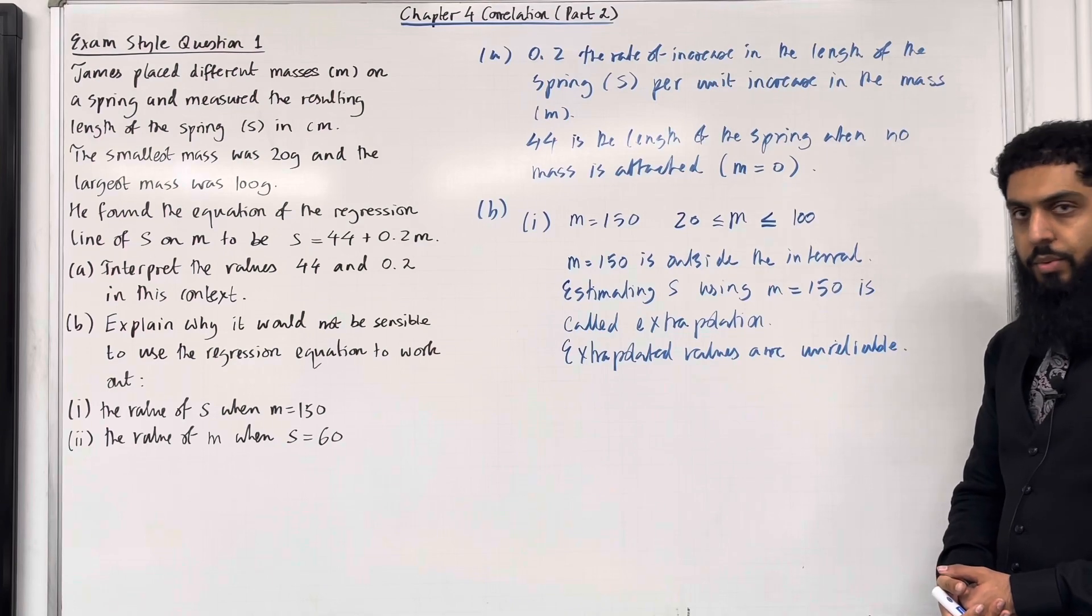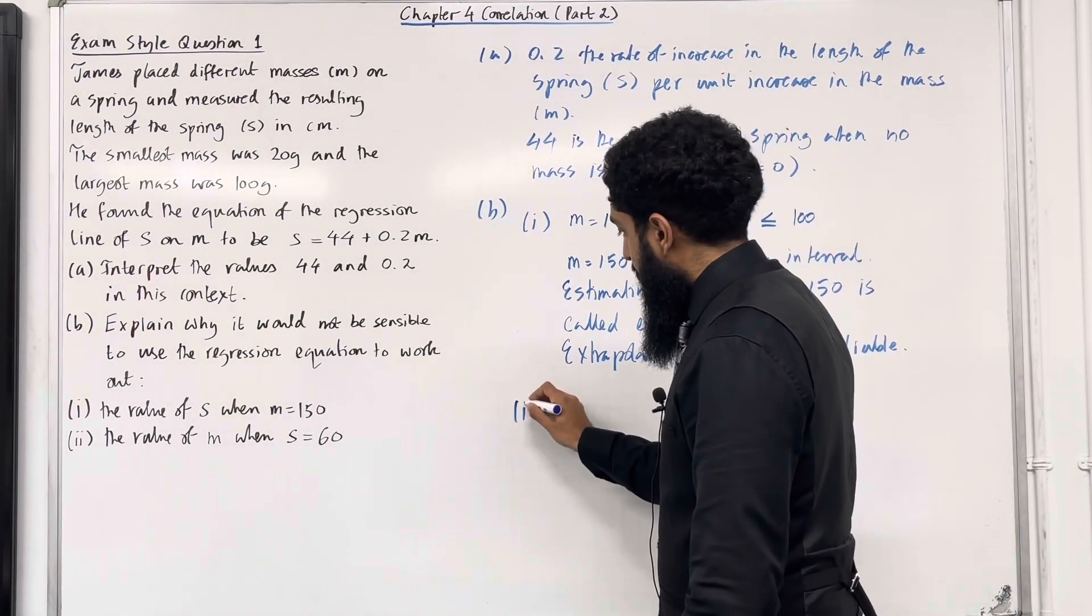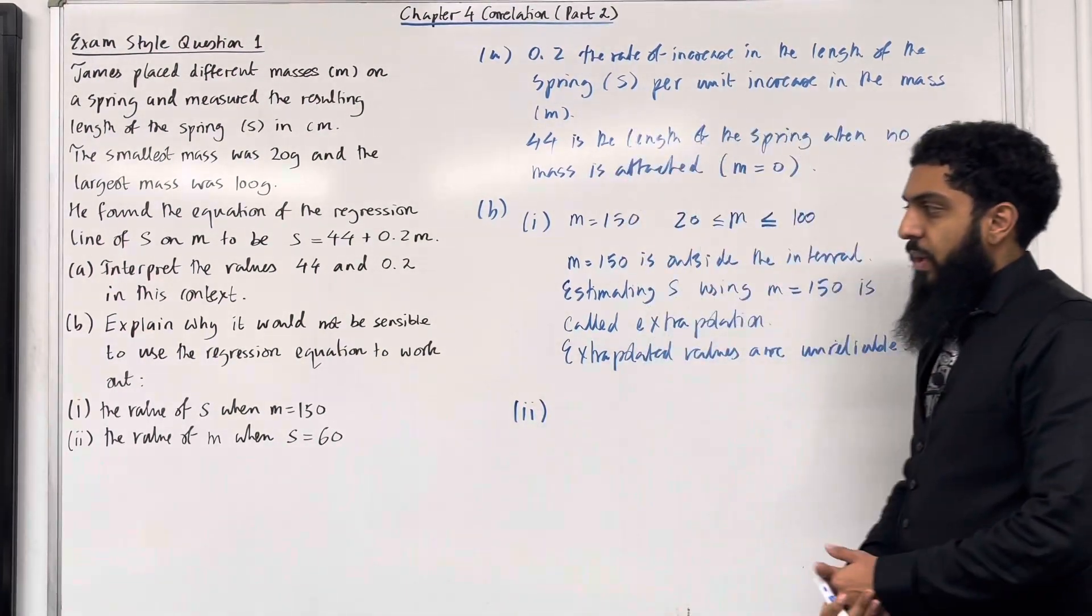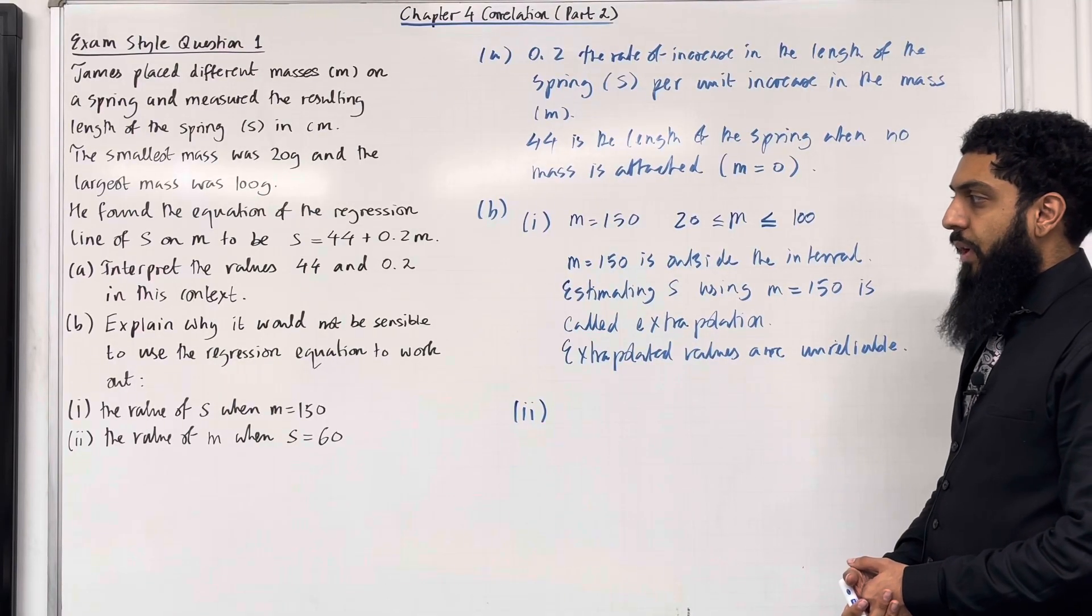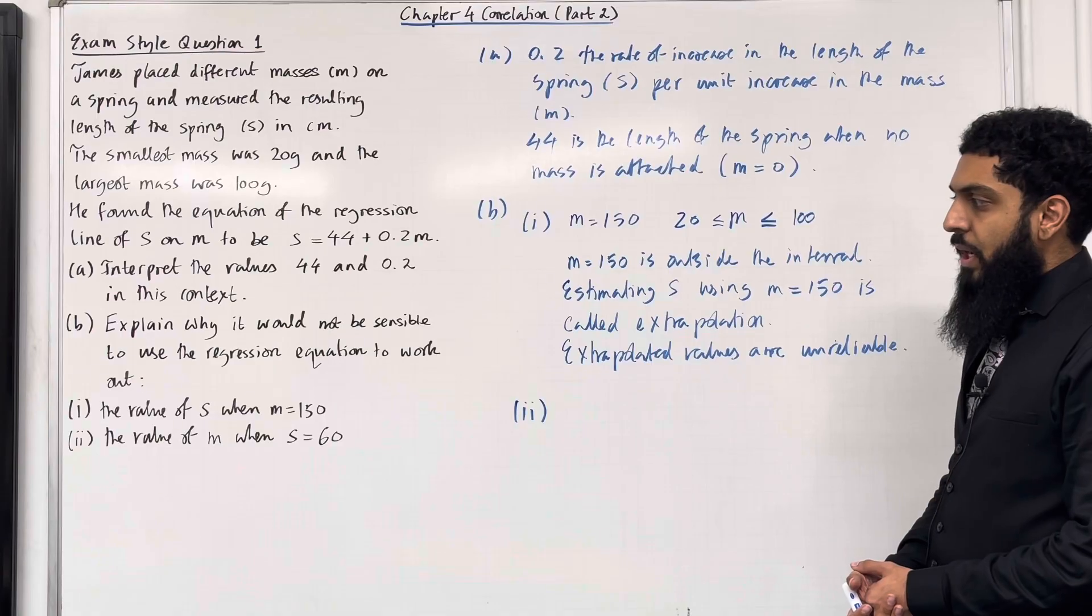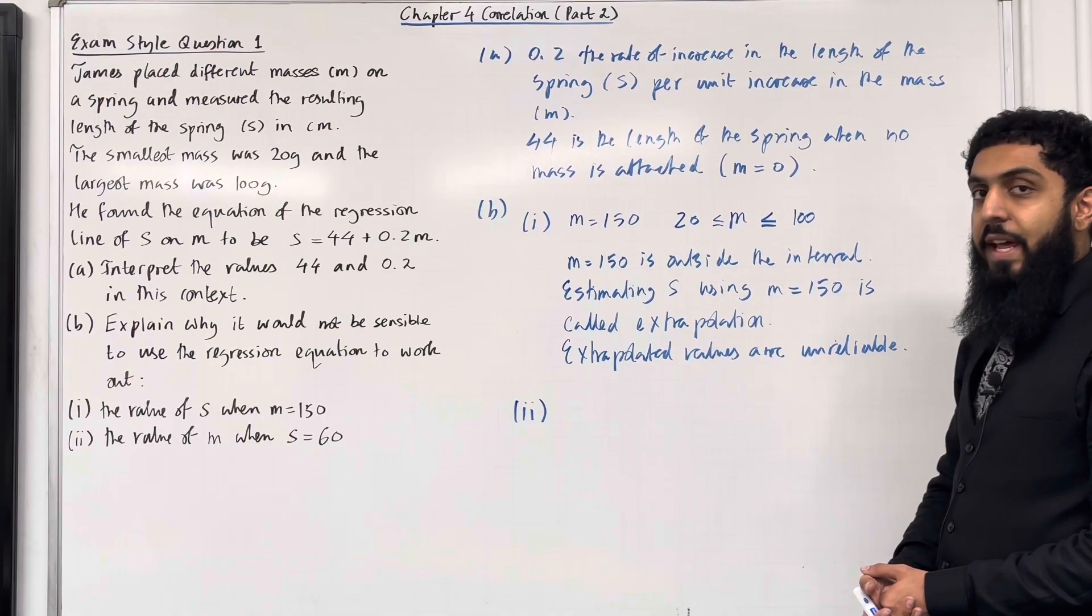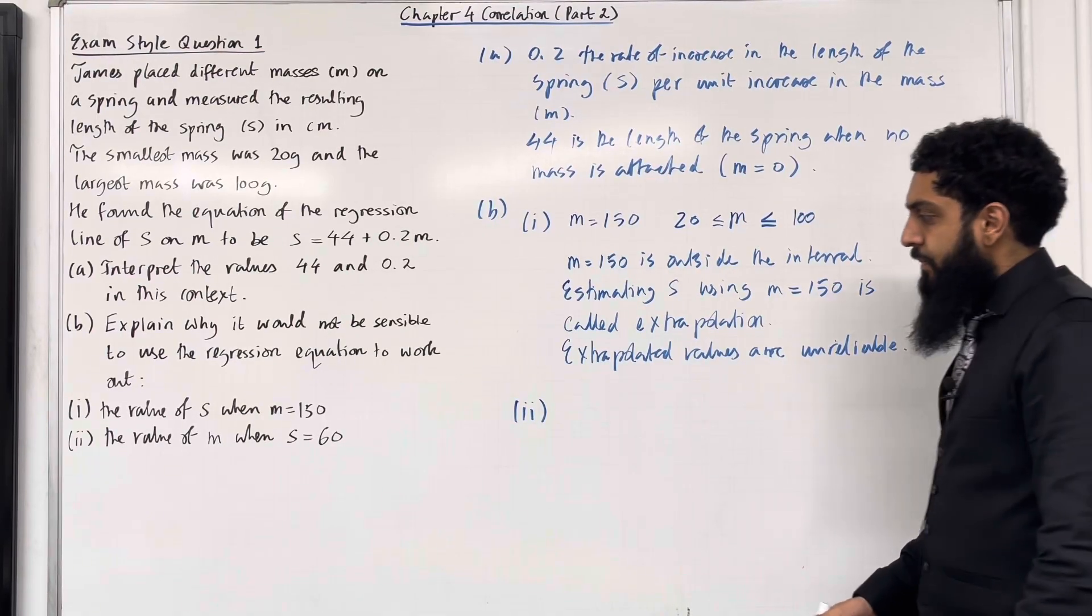Let's have a look at part B, part 2. What do we have here? Explain why it would not be sensible to use the regression equation to work out the value of m when s = 60.